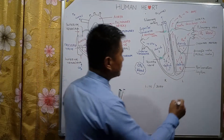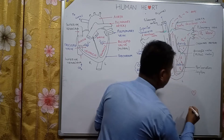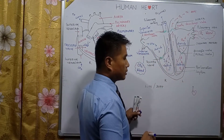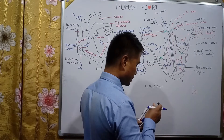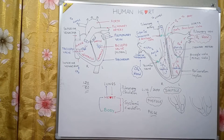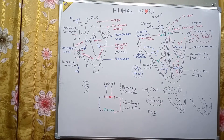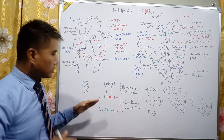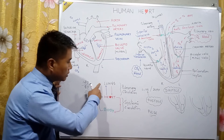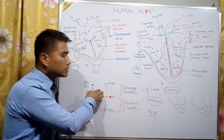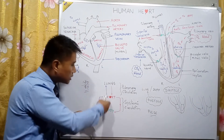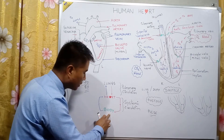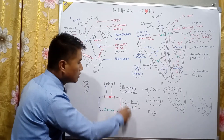In summary: the carbon dioxide-containing blood goes from the heart to the lungs and from the lungs back to the heart — this circulation is known as pulmonary circulation. The oxygenated blood goes from the heart to the body and from the body back to the heart — this is known as systemic circulation.